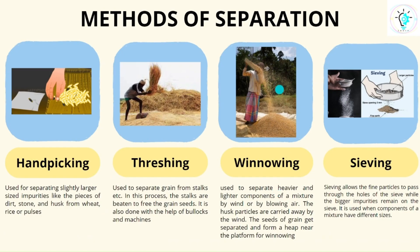Let us see some of the methods for separation. These methods are all physical methods — for example, hand picking, threshing, winnowing, and sieving. Hand picking is when we separate slightly larger sized impurities, for example dirt, stone, or husk from rice or pulses. We simply use our hand and pick the impurities apart.